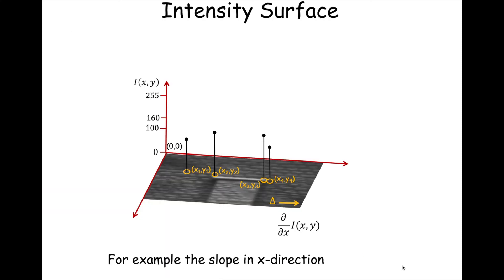When we left off last, we talked about the intensity surface representation of an image, and in that, we spoke specifically about grayscale. Certainly you can talk about intensity surface for a color image. When you do so, you separate the red channel from the green channel from the blue channel, and you traffic in the intensity surface for each of those channels separately.